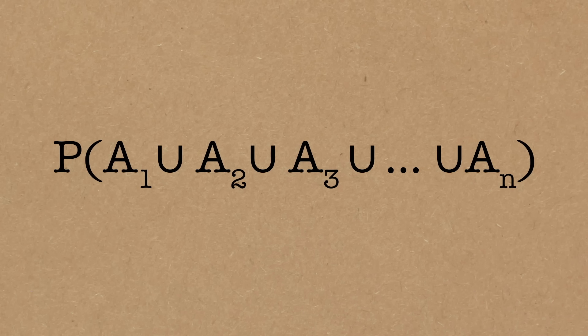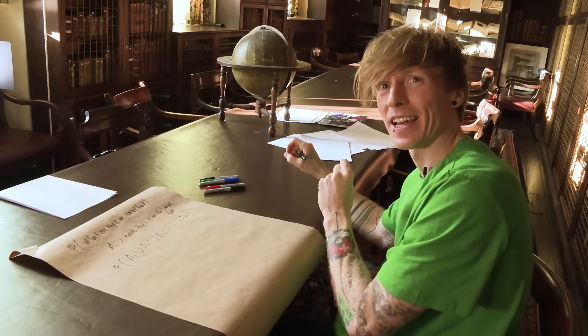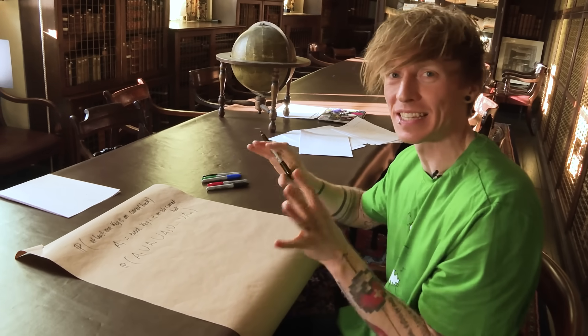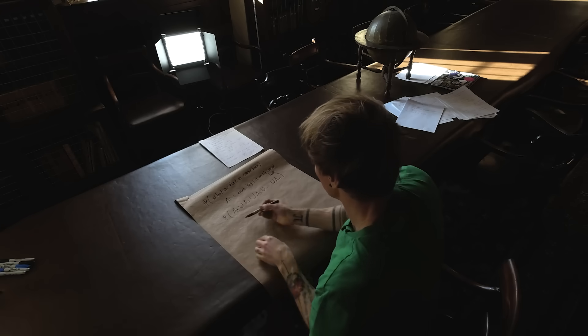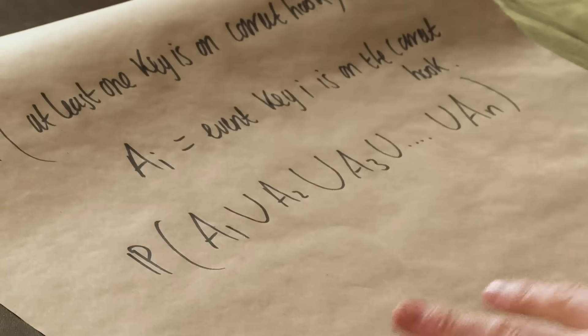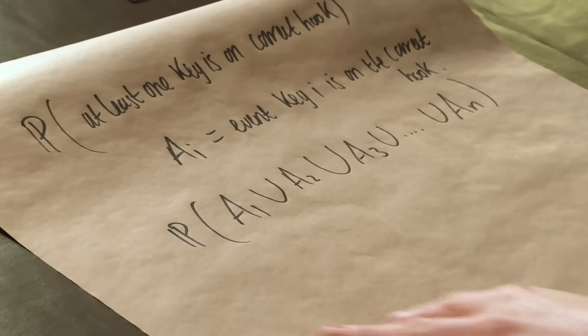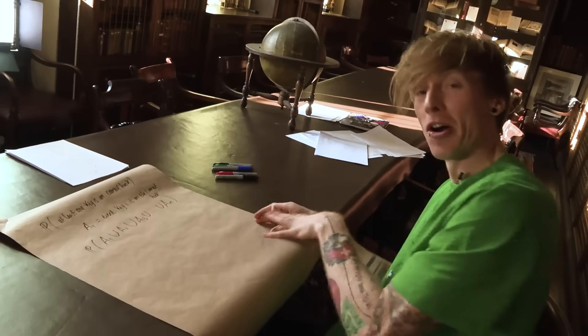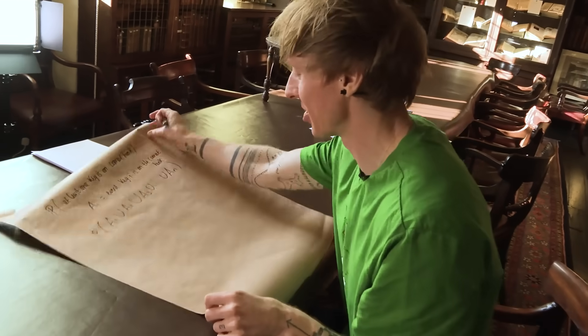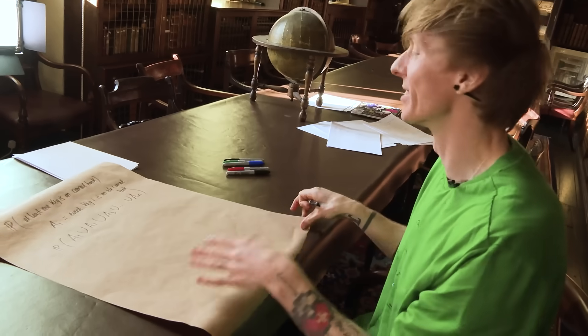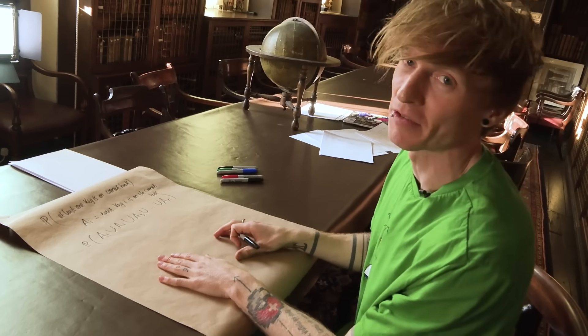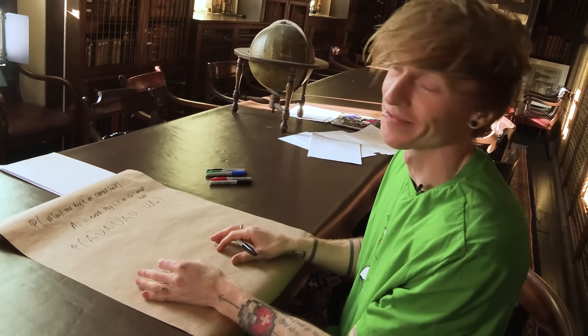Anytime you're dealing with infinity, usually it's a good idea to say, okay, let's understand what happens with some very large number, and then take that limit at the end. Because if you start with infinity at the beginning, you can very easily get lost and things can get muddled. So we're going to let n be infinity at the end.